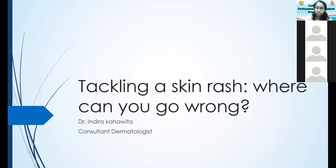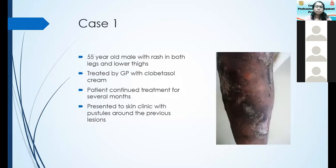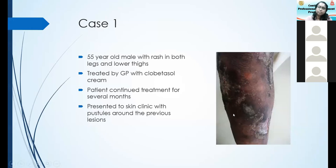We will go to case one. This is a 55-year-old male with a rash in both legs and lower thighs. The patient was treated by a GP with Clobetasol cream and continued this treatment for several months, then presented with pustules around the previous lesion. What we are seeing here is a case of pustular psoriasis. My guess is that the doctor must have thought of eczema rather than psoriasis, treated with Clobetasol, and on sudden withdrawal there was pustulation.